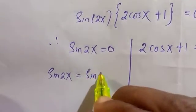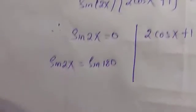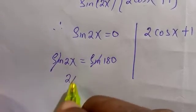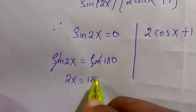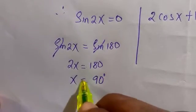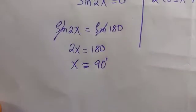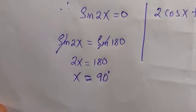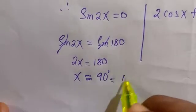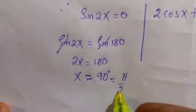Suppose I have this as sin(180°) - we know sin(180°) is 0. Therefore, if these two cancel each other, we have 2x = 180°, and dividing by 2 we get x = 90°, which in radian form is π/2.